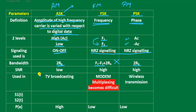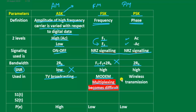Regarding signal-to-noise ratio, it should be much greater than 1. In ASK, the SNR is low, while in FSK and PSK it is greater than 1, so ASK is not preferred. ASK is used in TV broadcasting. FSK is used in modems, but multiplexing becomes very difficult with FSK. PSK is used in wireless transmission.